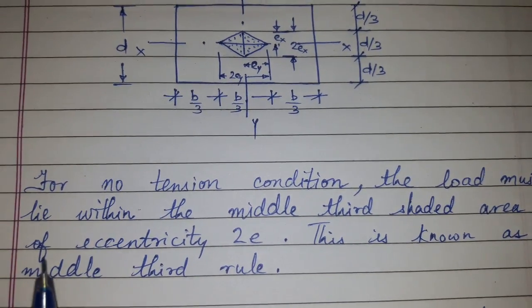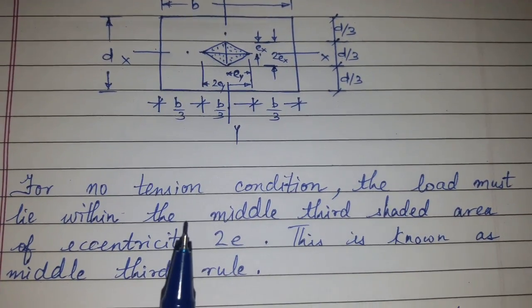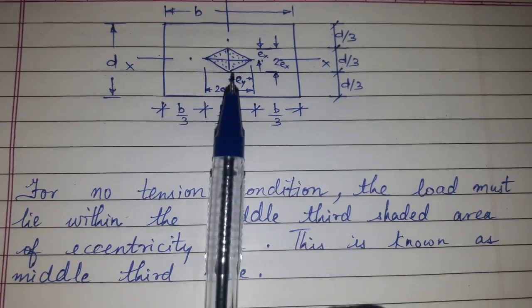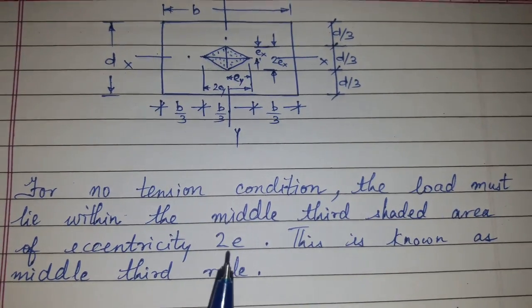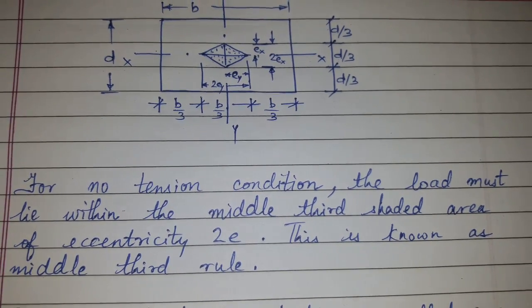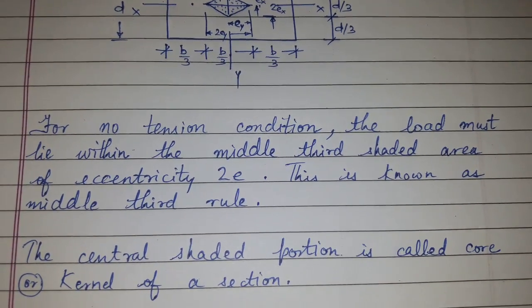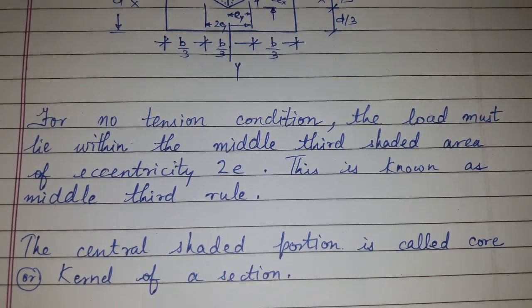We can see that for no tension condition, the load must lie within the middle third, that is the shaded area of eccentricity 2e. This is known as middle third rule. The central shaded portion is called core or kernel of section.